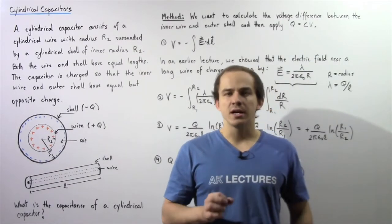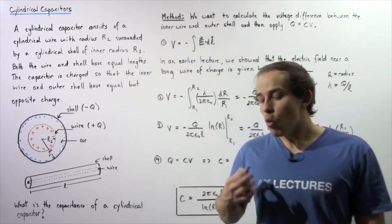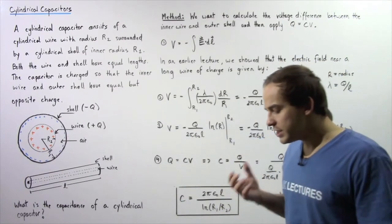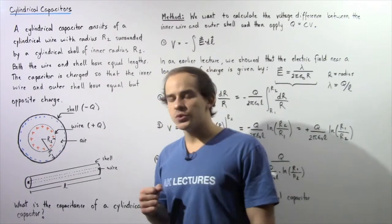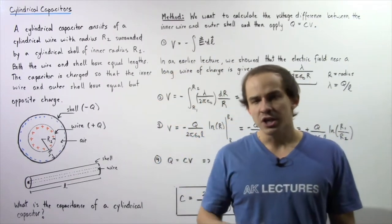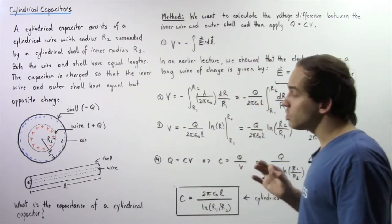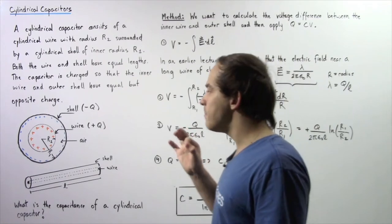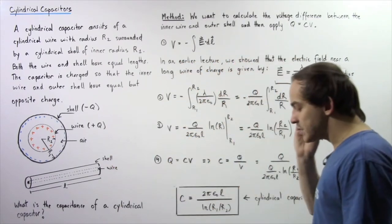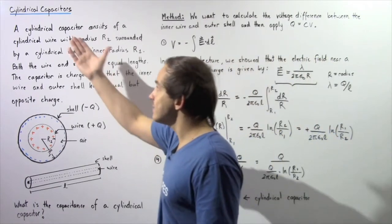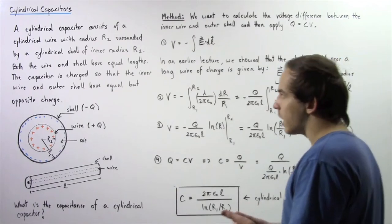In the previous lecture, we discussed parallel plate capacitors and we were able to determine what the capacitance equation is for a parallel plate capacitor. Now we're going to examine a second type of capacitor that is known as a cylindrical capacitor and we're going to determine what the capacitance equation is for such a capacitor. So let's begin by defining what a cylindrical capacitor is and let's see what it actually looks like.